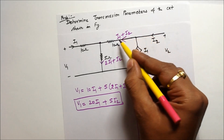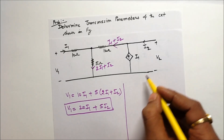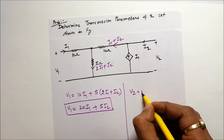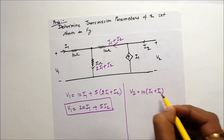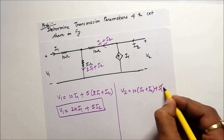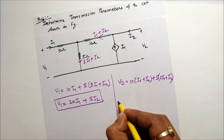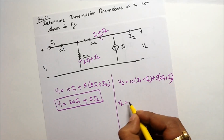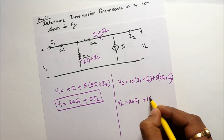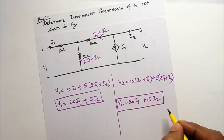Now I will use KVL in this loop to find out the second equation. So V2 equals 10(I1 plus I2) plus 5 into (2I1 plus I2), which gives V2 equals 20I1 plus 15I2. This is the second equation obtained from this circuit.